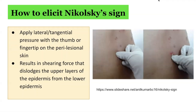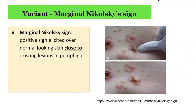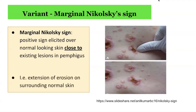There is a variant on Nikolsky sign known as marginal Nikolsky sign. Marginal Nikolsky sign refers to a positive sign elicited over normal looking skin that is close to existing lesions in pemphigus. It is essentially the extension of erosion onto normal surrounding skin, as demonstrated here on the image on the right hand side.